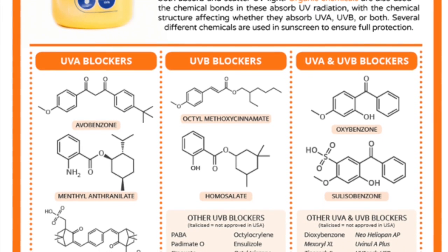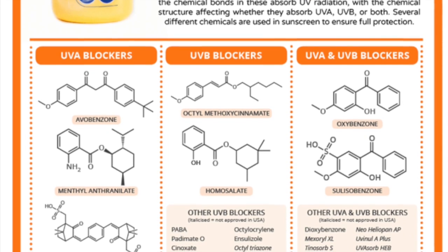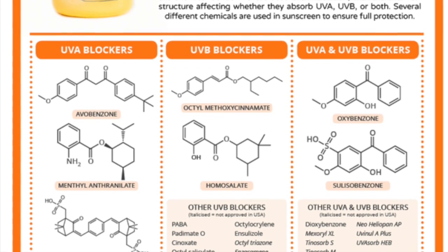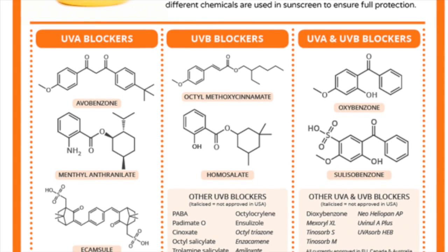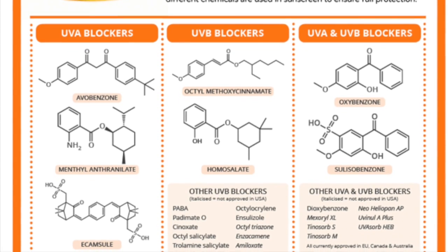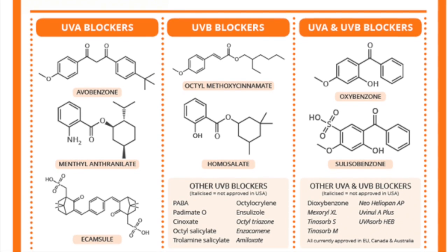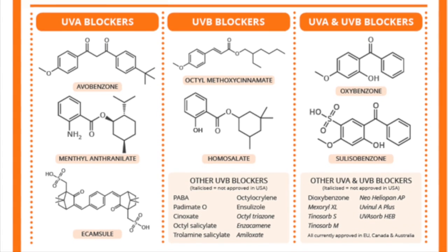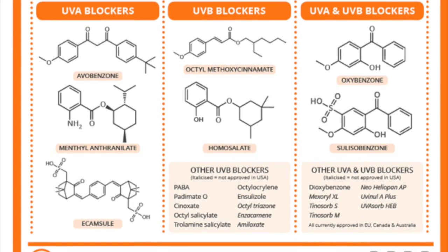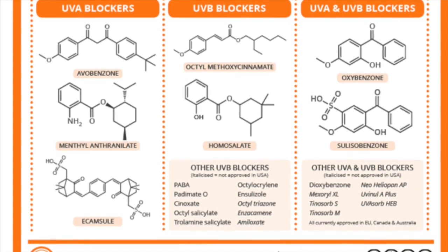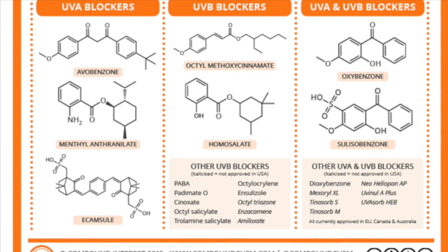In order to ensure the absorption of all types of radiation, different combinations of chemicals are used in sunscreen. For example, avobenzone, methylanthrylate, and mcapsule are all organic UVA blockers, or octal, methoxycinnamate, and homosalate are UVB blockers. Oxybenzone and sulisobenzone are UVA and UVB blockers, so each compound blocks both types of radiation.